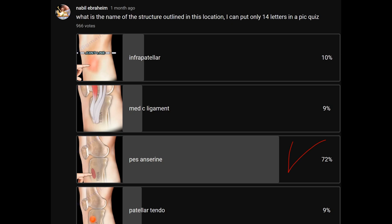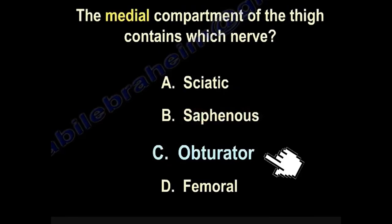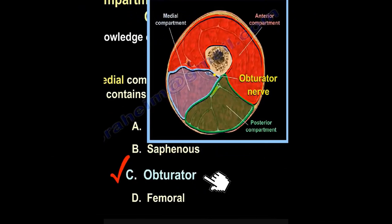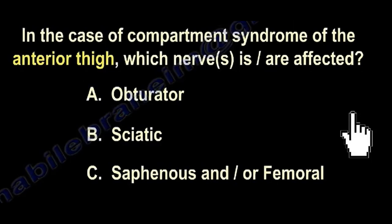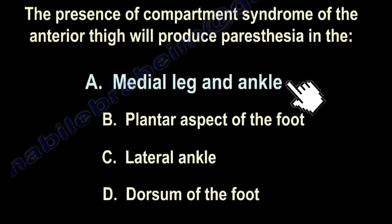Here is the location of the piriformis. The nerve supply of the piriformis is the obturator, sciatic, and femoral nerves. The medial compartment of the thigh contains the obturator nerve. If the patient develops anterior compartment syndrome of the thigh, the saphenous nerve or femoral nerve will be involved. The presence of compartment syndrome of the anterior thigh will produce paresthesia in the medial leg and ankle.